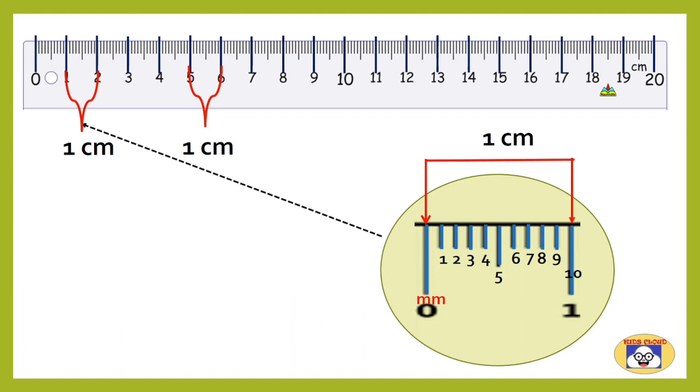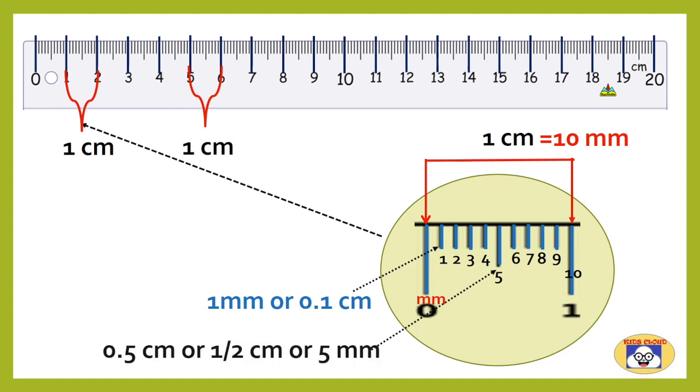Thus each one centimeter is equal to 10 millimeters. There is one middle length line which is halfway between every centimeter. It corresponds to 0.5 centimeter, or half centimeter, or five millimeters.